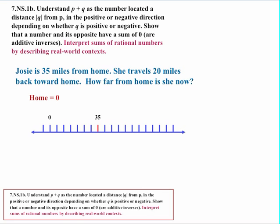Now with almost the same problem: Josie is 35 miles from home, but she travels 20 miles back toward home. We're going an absolute value of 20 miles — the same distance — but this time in the opposite direction. Starting at 35 and going back toward home 20 miles puts us at 15 miles from home. It's easy to modify this scenario by changing the numbers slightly to show traveling the same distance in one direction versus the other.